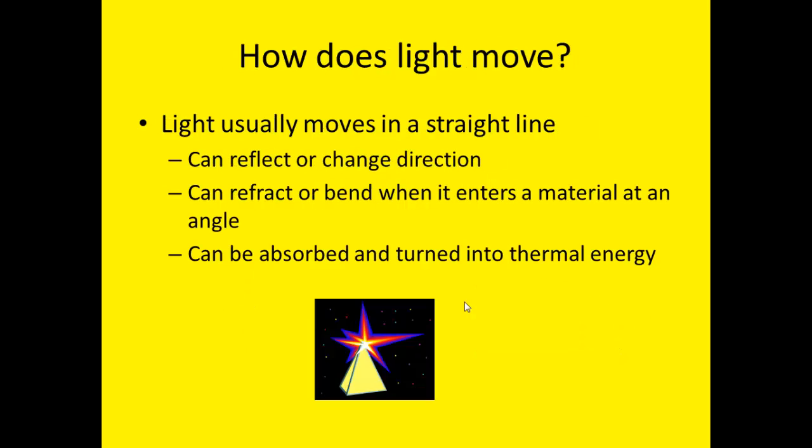So how does light move? Electromagnetic waves do not need matter in order to travel. They can travel through space. Light travels the fastest in a vacuum, about 300 million meters per second. Light travels more slowly through materials such as air or water.